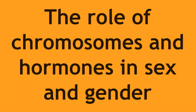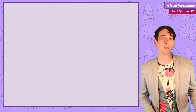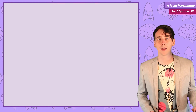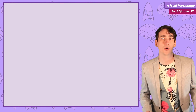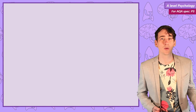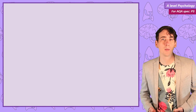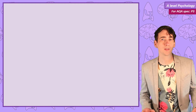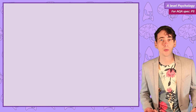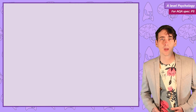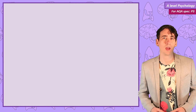The role of chromosomes and hormones. Two aspects of the biological approach we need to consider are chromosomes and hormones. They are of course connected, with your genes coding for the levels of hormones in your body. But we could be asked about them separately, and their roles in both sex and gender, so I'm going to make sure I cover all of that.